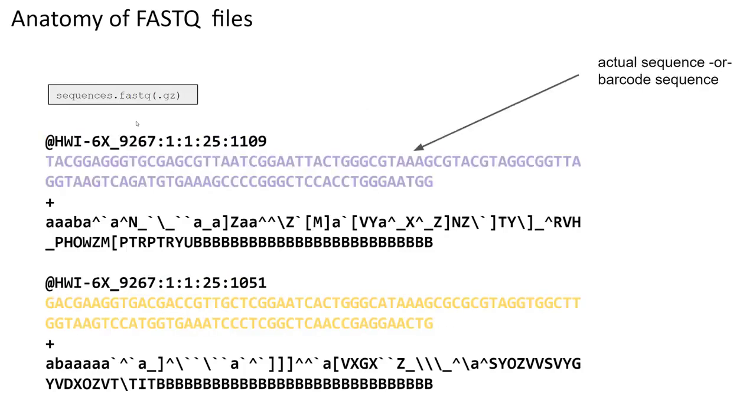The second line is your actual sequences. In this example, this is our DNA sequences from our amplicons. But of course, if this was our barcode FASTQ file, for example, then this would simply correspond to the seven or eight nucleotide long unique barcodes.